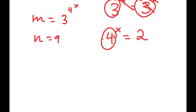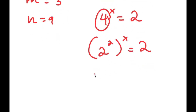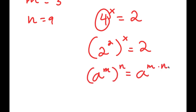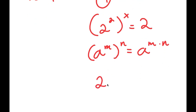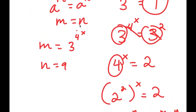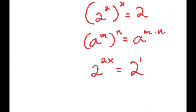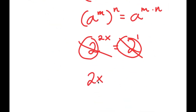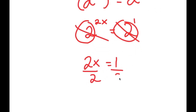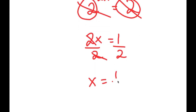Since 4 equals 2 squared, I rewrite this as 2 squared to the power of x equals 2. Using the power-of-a-power rule, this becomes 2 to the power of 2x equals 2. Since 2 equals 2 to the first, equating exponents gives 2x equals 1. Dividing both sides by 2, I get x equals one half.